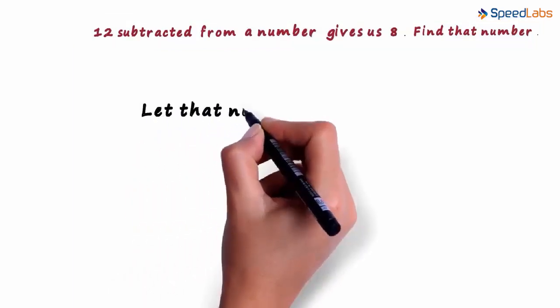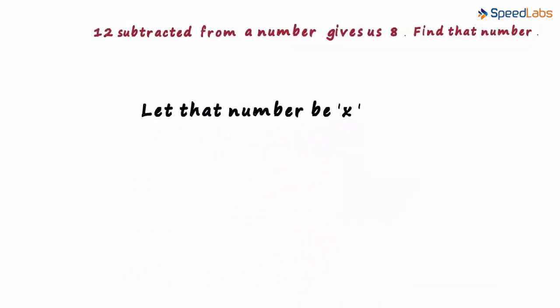Let that number be x will be the first thing you write in most of the problems. We assign a variable to the unknown. 12 subtracted from something gives us 8, and we need to find that something.